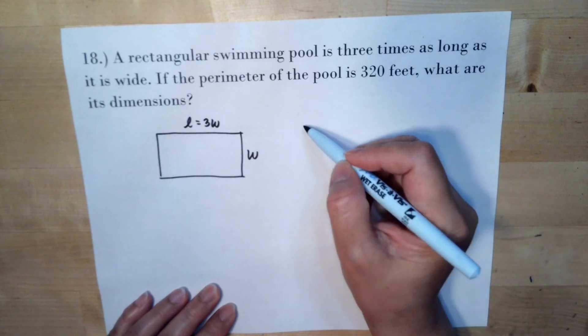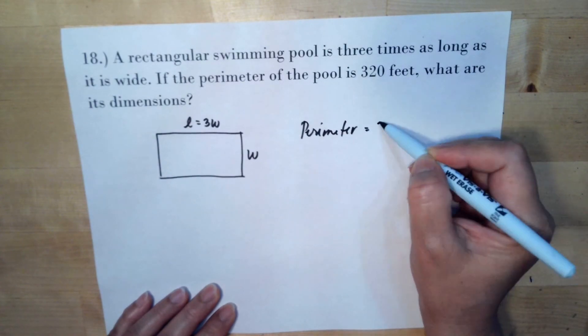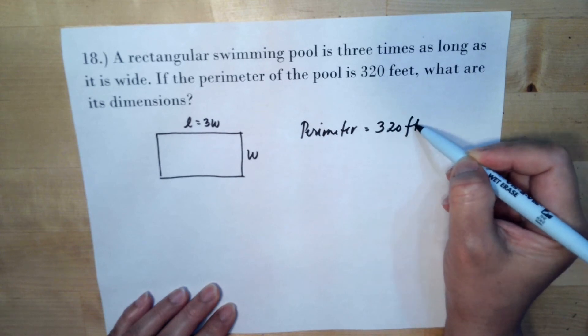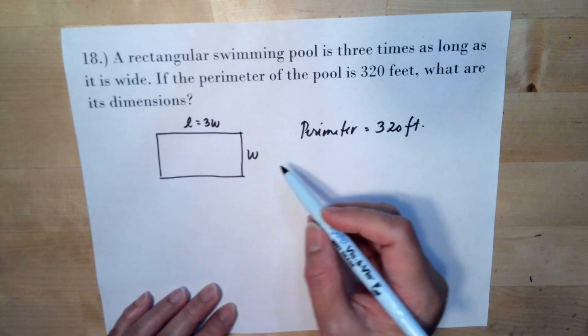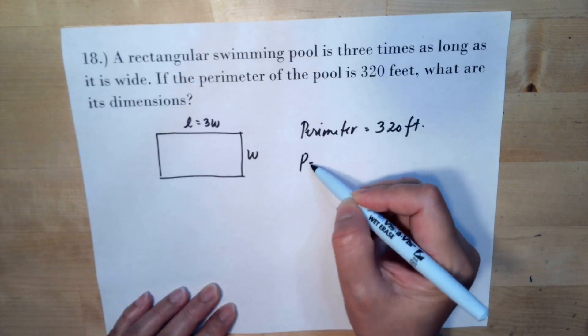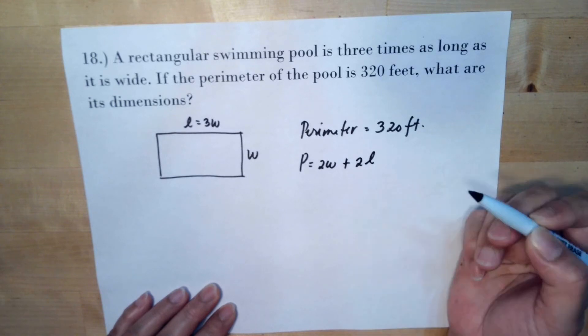Then the perimeter is equal to 320 feet. And for a rectangular shape, the perimeter is twice the width plus twice the length.